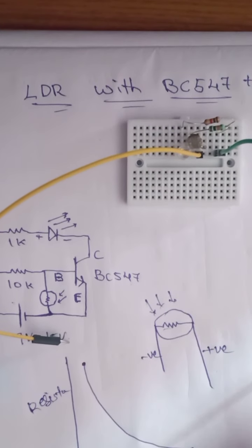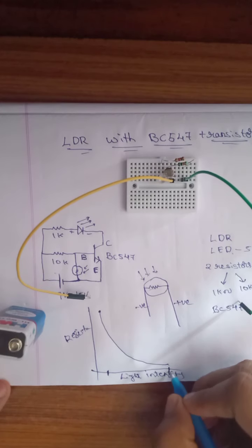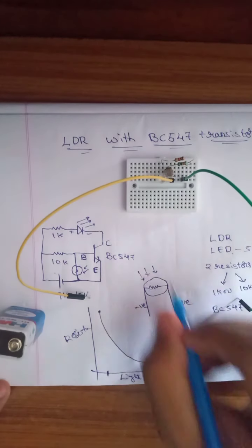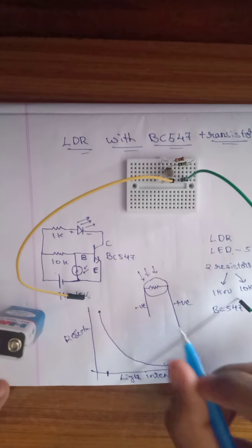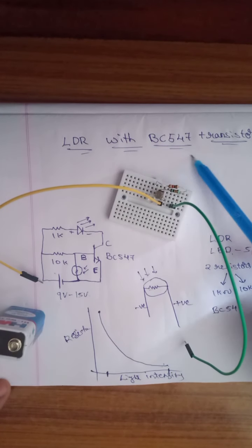When the light intensity is high, resistance is lower and the LED glows. This is the working principle of LDR using BC547 transistor.